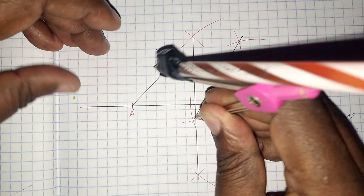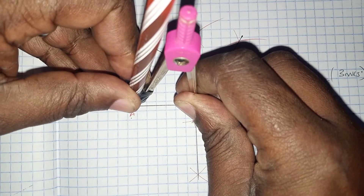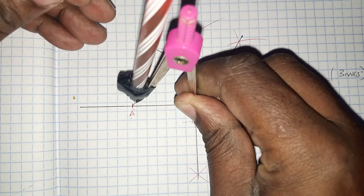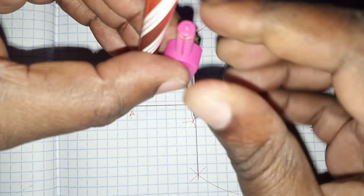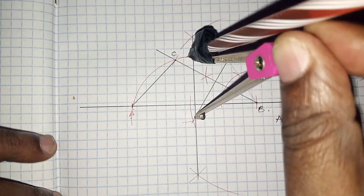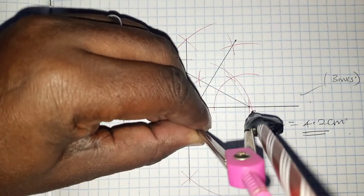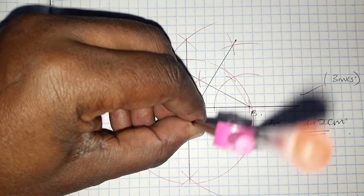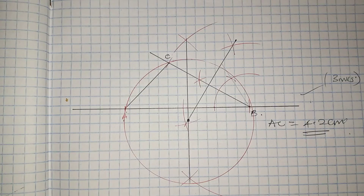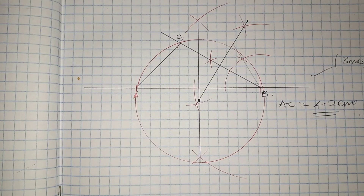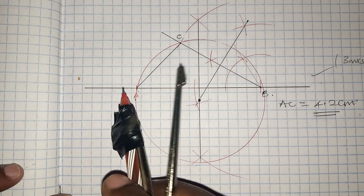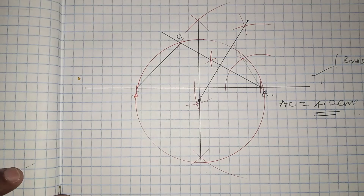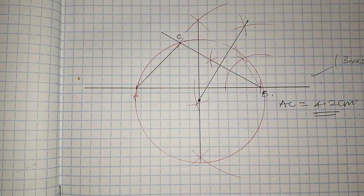This intersection point becomes the center of the circle. With that radius, we place the pencil at one vertex and draw the circle. You can see it touches all three vertices — vertex A, vertex B, and vertex C. The circle passes through all three. That earns us two more marks.